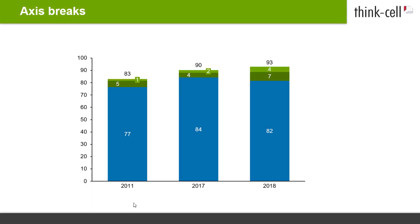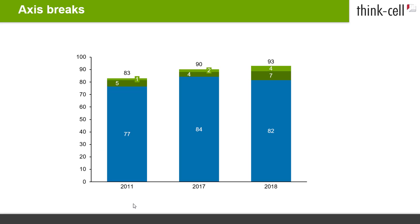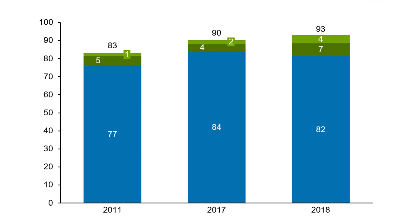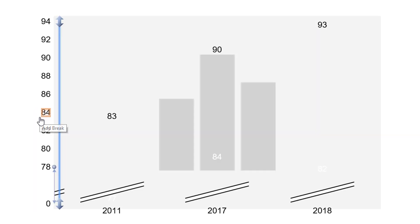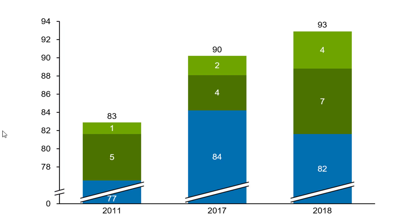Let's assume you have a chart with particularly large segments alongside much smaller ones. To enhance the readability of the smaller segments, you can add a value axis break. Right-click on the part of the segment or axis where you want to insert the break to open the context menu. When adding a value axis break, the exact position you right-click onto a segment or axis makes a difference. Select Add Break to insert the break at the chosen position.